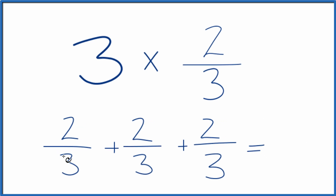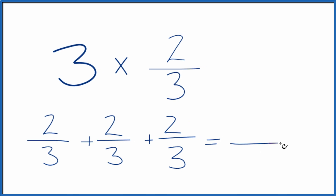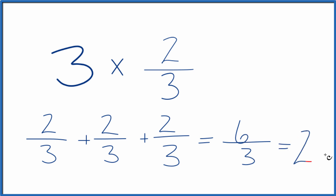When you're adding fractions, if the denominator down here is the same, you just bring that across and add the numerators. 2 plus 2 is 4, plus 2 is 6. 6 thirds. So 3 times 2 thirds gives you 6 thirds. And since 3 goes into 6 two times, we could just call it 2.